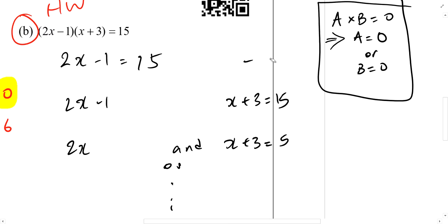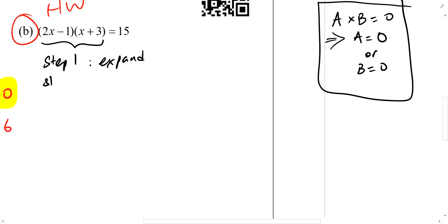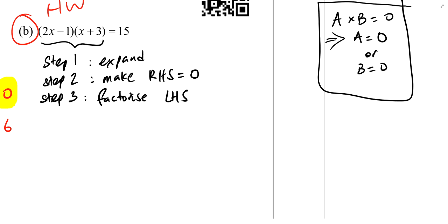But right now, do I have 2 expressions multiplied together to give me 0? Do I have the question in a form a times b equal to 0? Yes or no? No, quite clearly no, because I've got something times something equal to 15. So now, I am going to try and make it into the form a times b equal to 0 by expanding this. Step 1, expand. Step 2, you may want to copy this down. Make right hand side equal to 0. Step 3, factorize. Left hand side. So by following these 3 steps, you will end up with a times b equals to 0. Then a will be equal to 0 or b equal to 0.